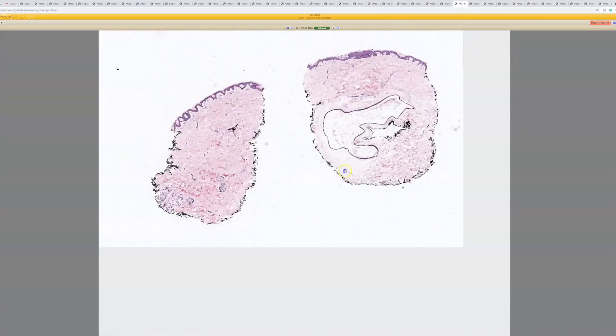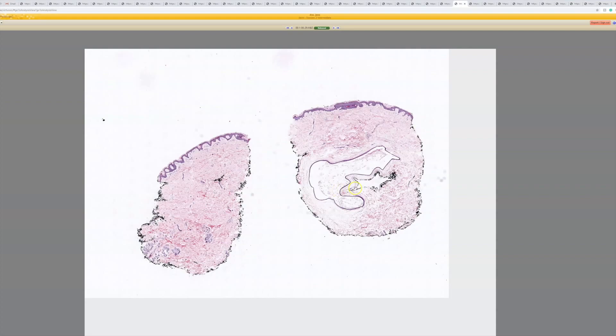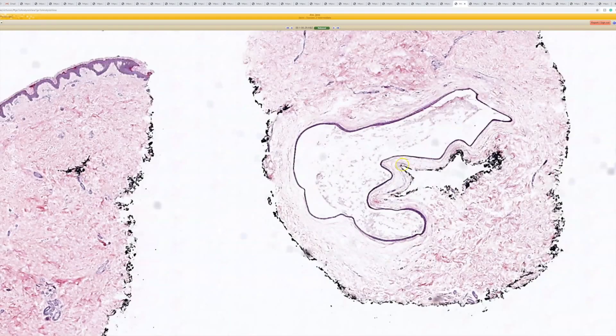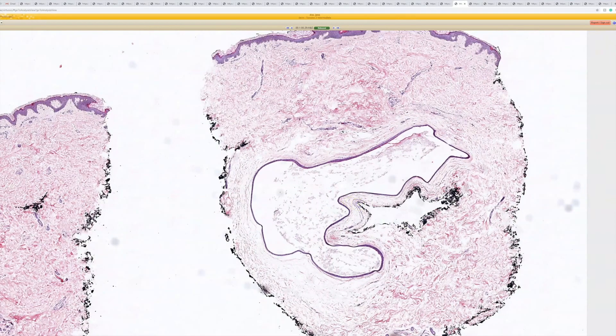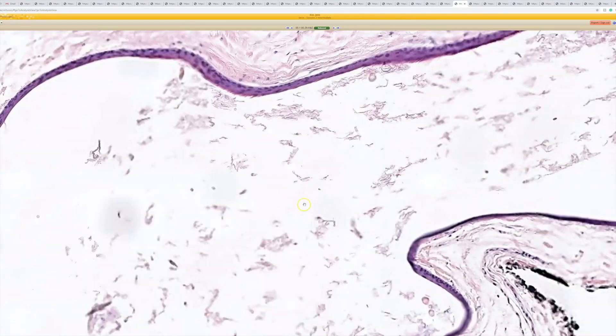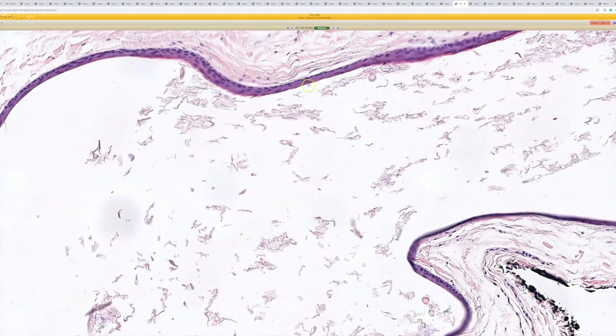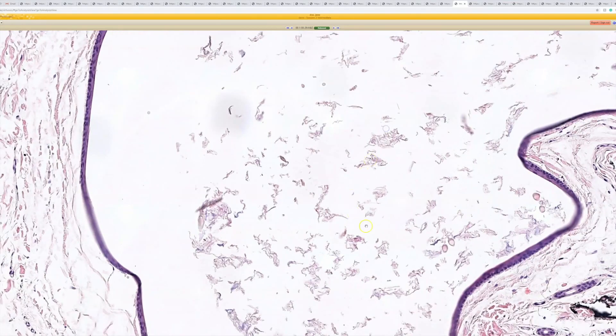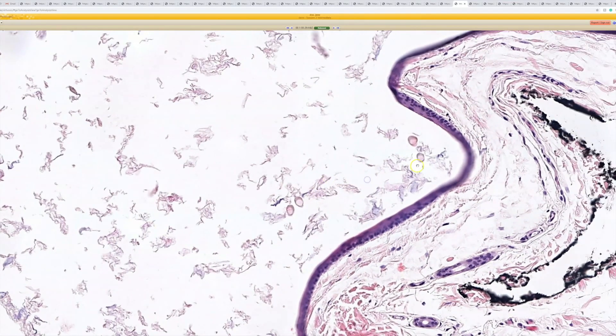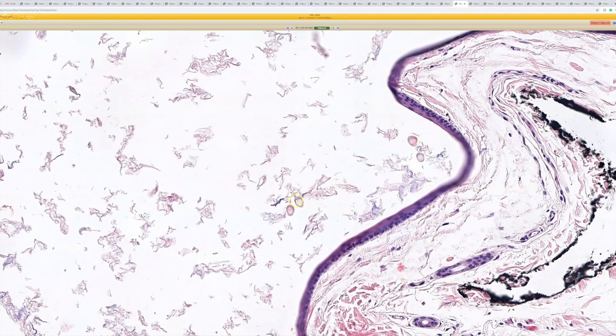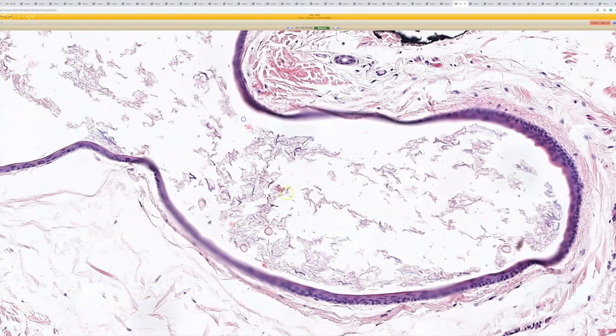Here's case 29. This one is a vellus hair cyst because there are little vellus hairs hiding in the middle. You've got a tiny cyst with stratified squamous lining, and there are lots of tiny little hair shafts and some keratin flakes and debris. So this is a vellus hair cyst.